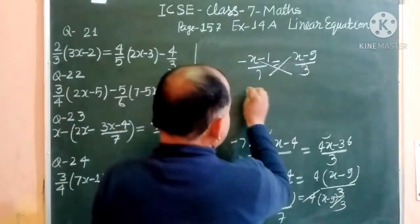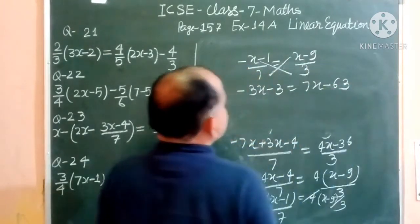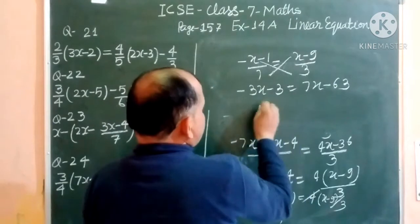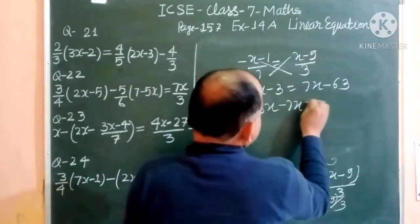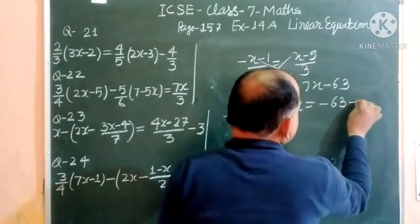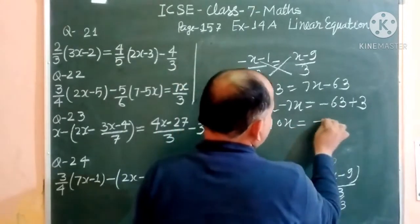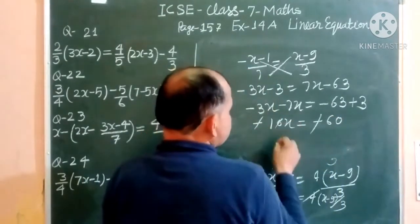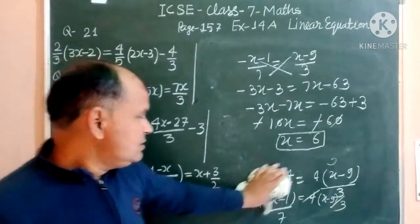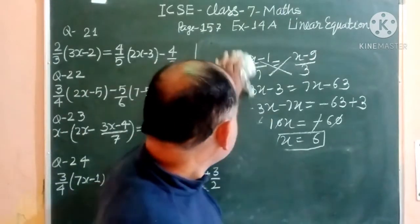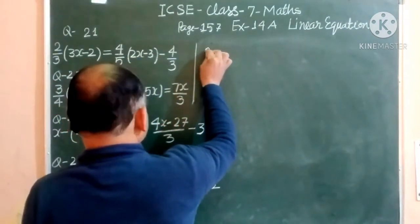Cross-multiplying: -3(x + 1) = 7(x - 9), so -3x - 3 = 7x - 63. Bringing all x terms to one side: -3x - 7x = -63 + 3, giving -10x = -60, so x = 6. The answer to question 23 is x = 6.